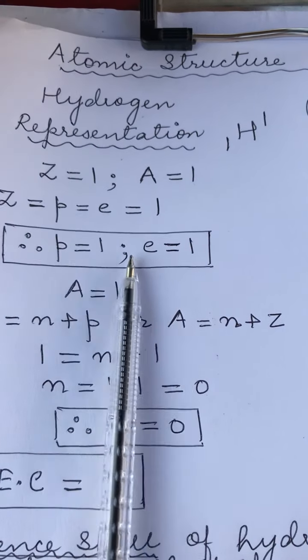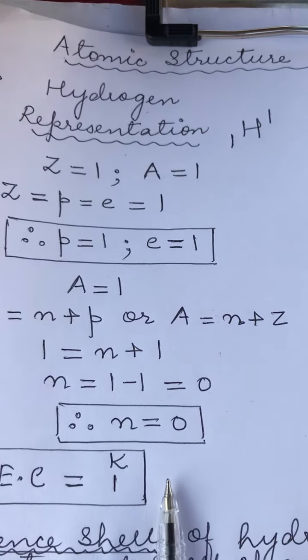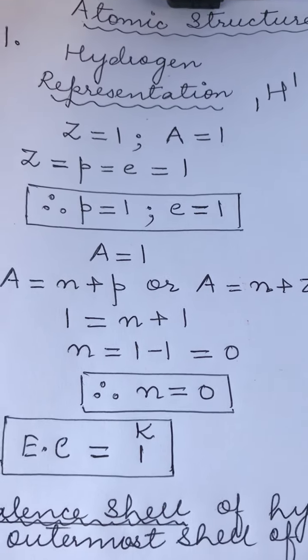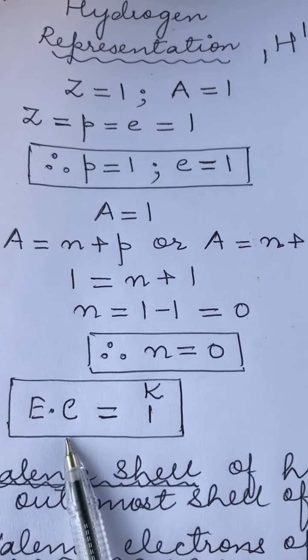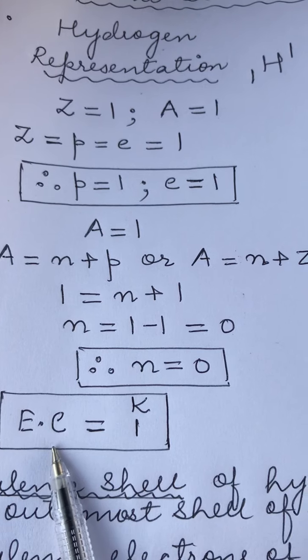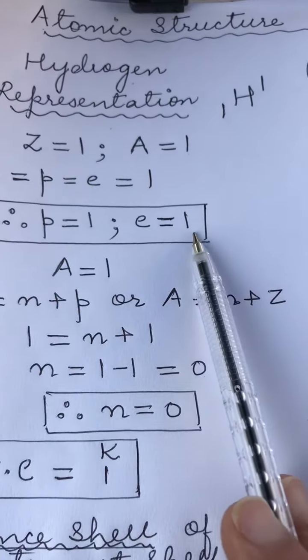We have the required number of protons, electrons and neutrons for drawing the structure. What is next that we require? We need to know what is the electronic configuration, that means how are the electrons arranged in different shells. Since it has only one electron...